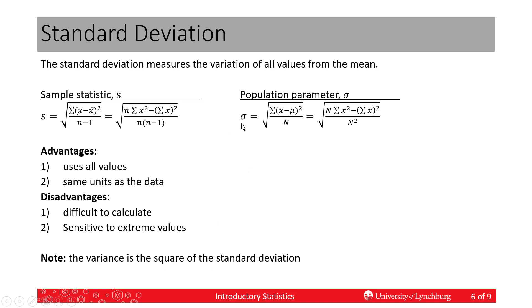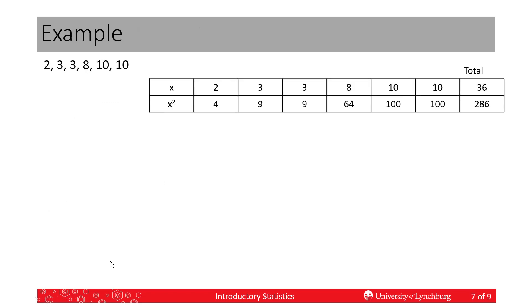For the population, the variance is sigma squared. Since you're taking the same units as the data and squaring it, you end up with square units for the variance. So for the variance, s squared or sigma squared, you do not have the same units as the data.